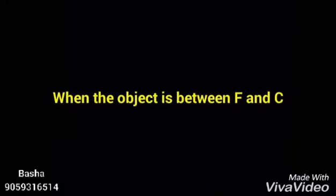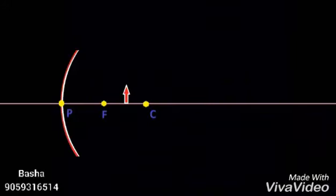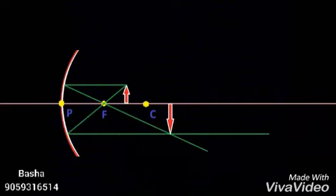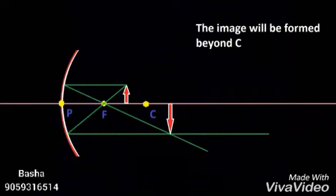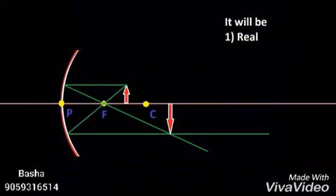Case 5: When the object is between F and C, observe the rays. The intersecting point is beyond C, so the image is formed beyond C. The image will be real, inverted, and enlarged.